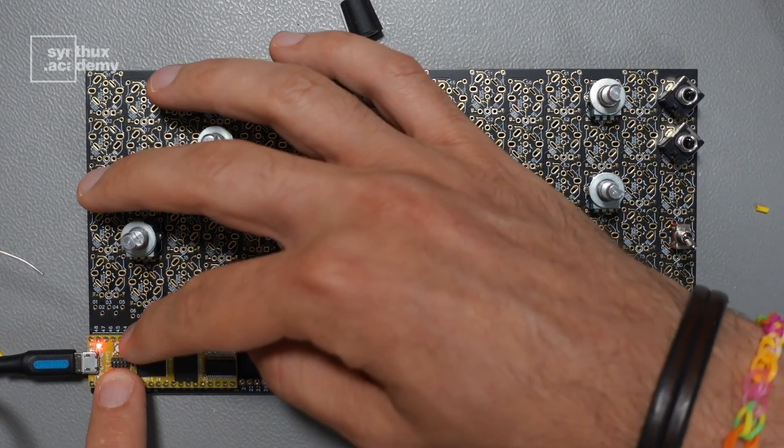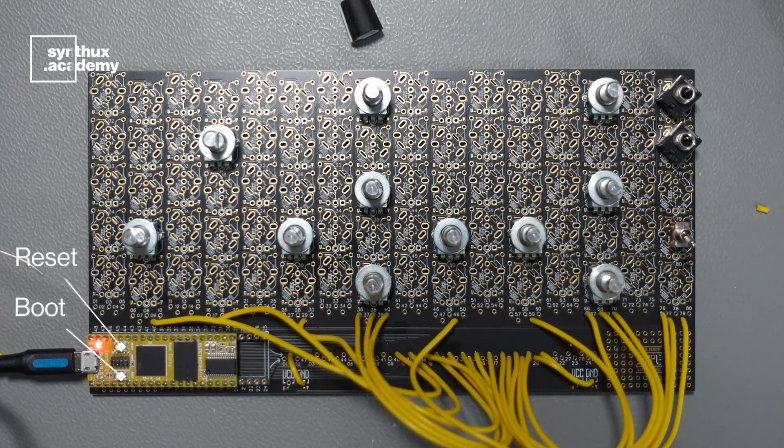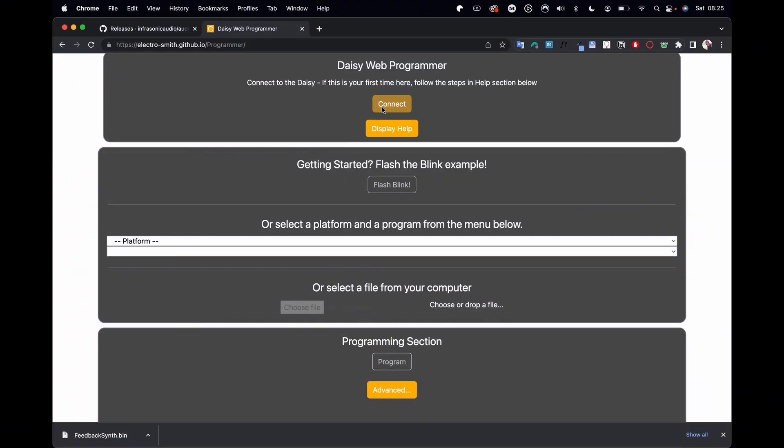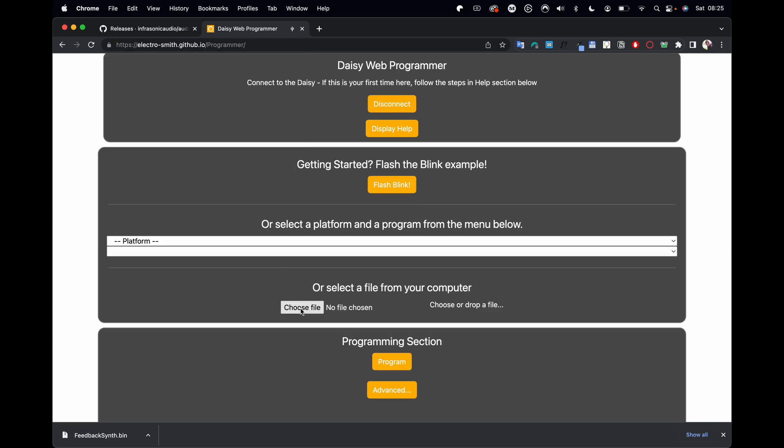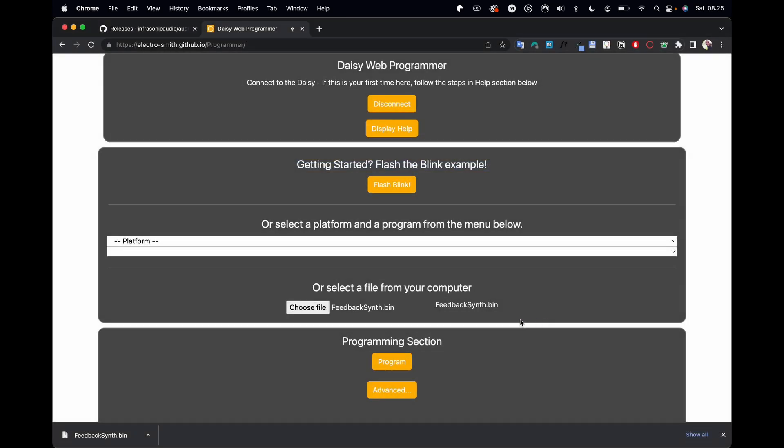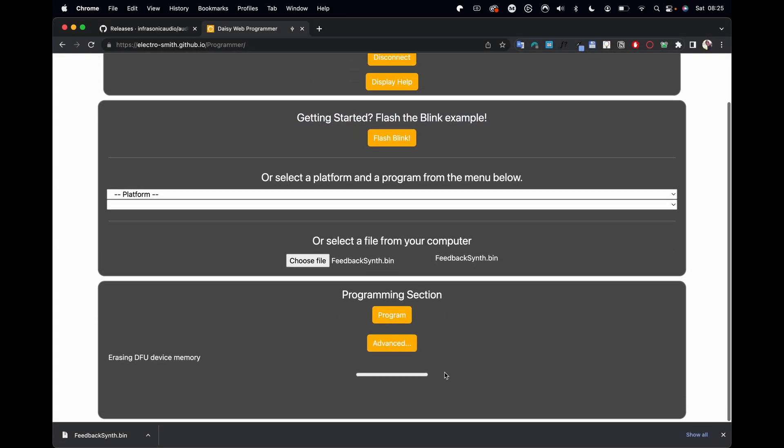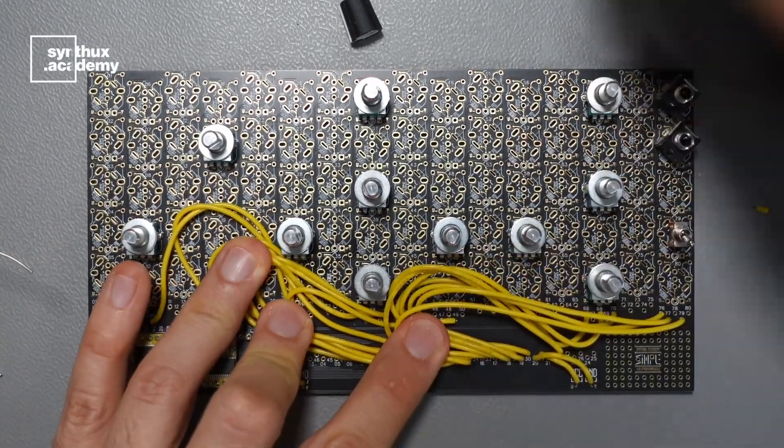We need to press boot reset on our daisy. This allows us to install a new program on the daisy itself. On the programmer, click connect and choose your daisy. Now click choose file and navigate to where you saved the bin file. Select and click program. Once it's done, you should be able to hear sound from the two outputs.